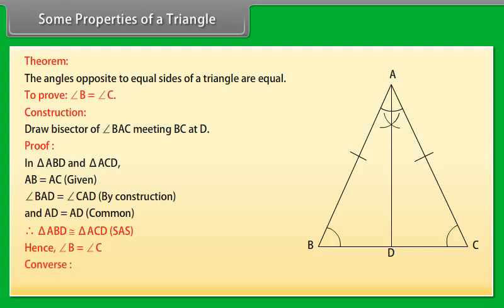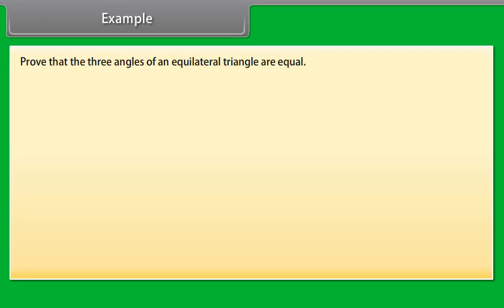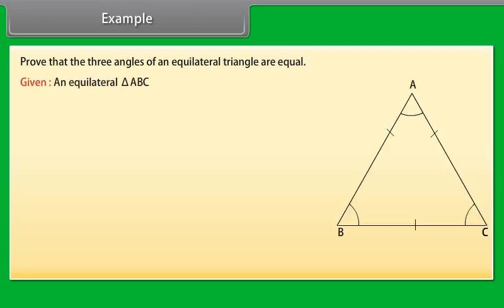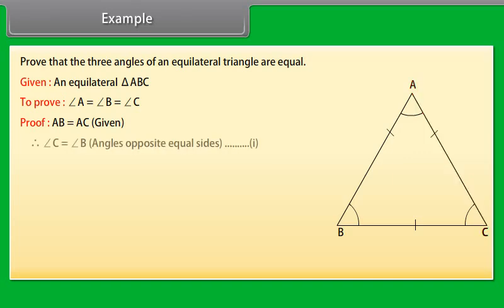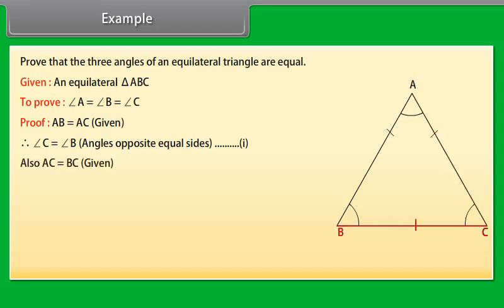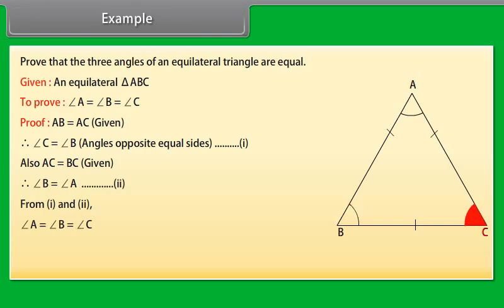The converse of the above theorem is also true, which says that the sides opposite to equal angles of a triangle are equal. For example, prove that the three angles of an equilateral triangle are equal. Given an equilateral triangle ABC, we have to prove that angle A is equal to angle B which equals angle C. Proof: AB is equal to AC (given). Therefore, angle C is equal to angle B because angles opposite equal sides are equal — mark it as (1). Also, AC is equal to BC (given). Therefore, angle B is equal to angle A — mark it as (2). From (1) and (2), angle A is equal to angle B which is equal to angle C.